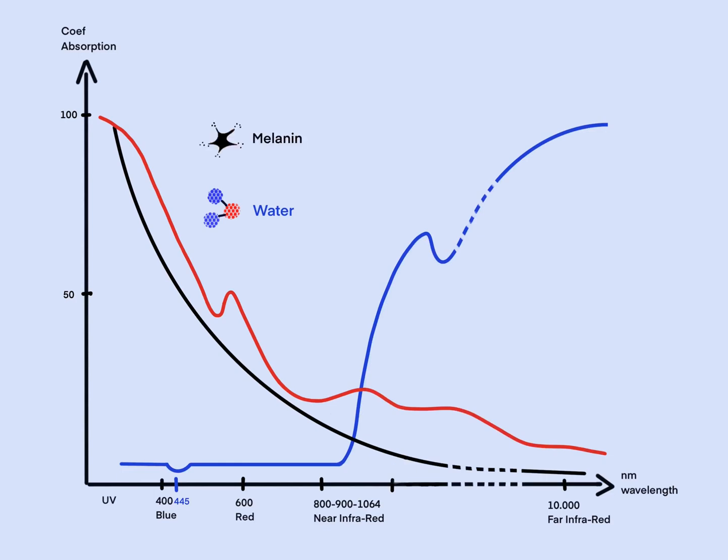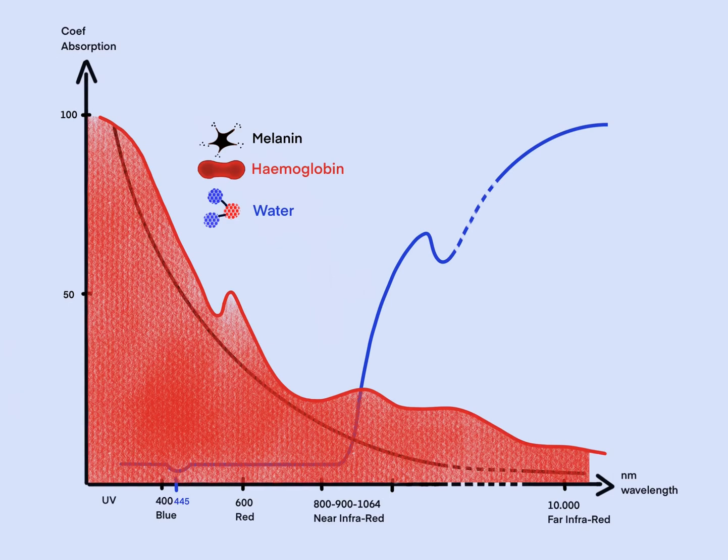The coefficient of melanin and hemoglobin are the opposite. It is much higher in the visible spectrum and decreases in the infrared wavelengths.